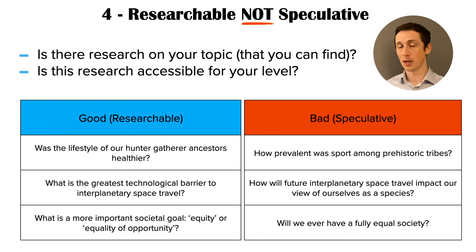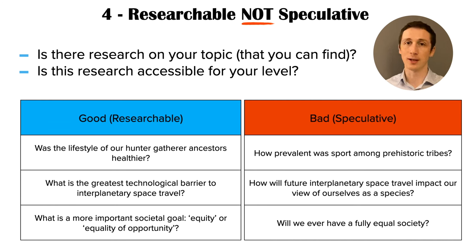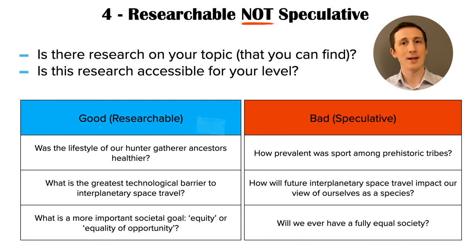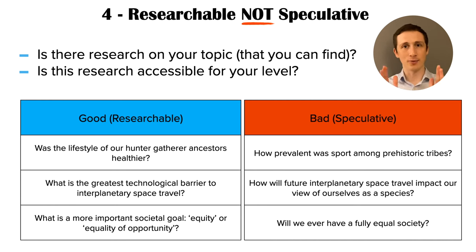This is the hardest of the four tips and it might require you to just do some research to find out. You might not know right from the beginning whether a topic is going to be researchable until you give it a go. So maybe pop into Google Scholar, type in a few keywords — is there anything out there on your topic of choice? If you don't start to find things quite quickly, that's probably an indication it's going to be a real challenge to research, and it might be better to choose a different question. Is your EPQ title researchable or is it speculative?